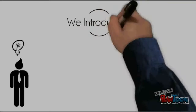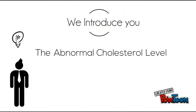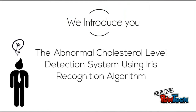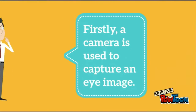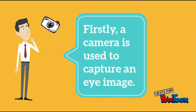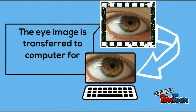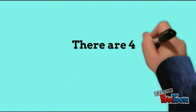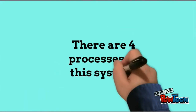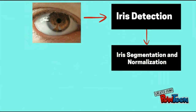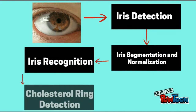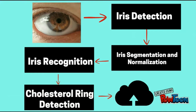We introduce the abnormal cholesterol level detection system using an iris recognition algorithm. First, a camera is used to capture an image, which is then transferred to a computer for processing. There are four processes in this system: iris detection, iris segmentation and normalization, iris recognition, cholesterol ring detection, and cloud server upload.